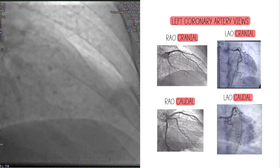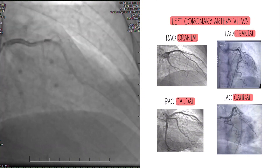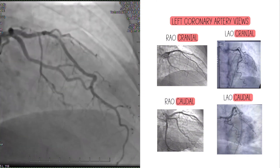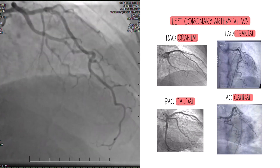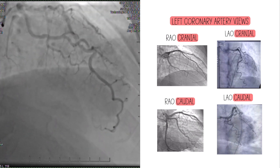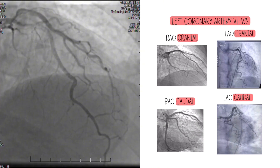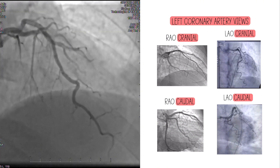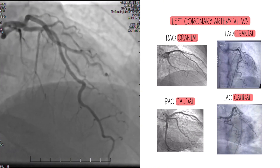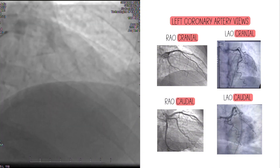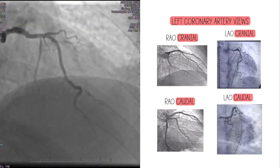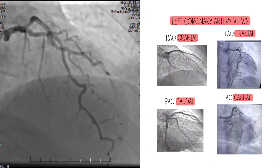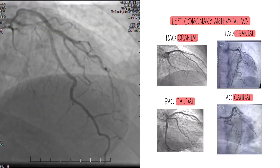Why do we even take different views? Why do we take so many? Why do we inject more contrast? The reason is the heart is a 3D object, and when you're trying to take flat 2D images of a 3D object, you're just not going to get the whole thing.